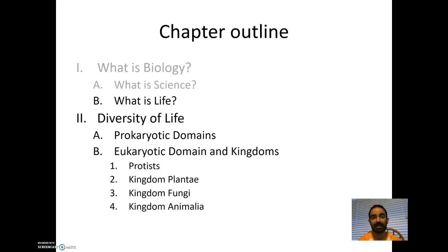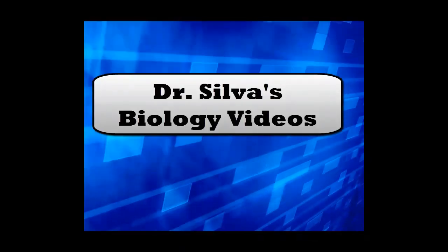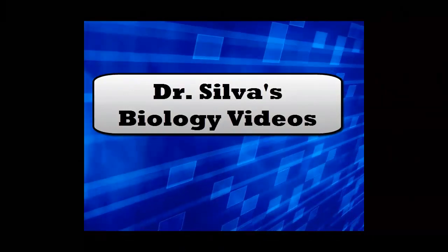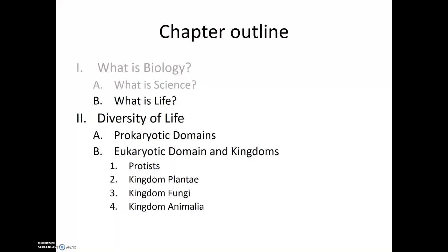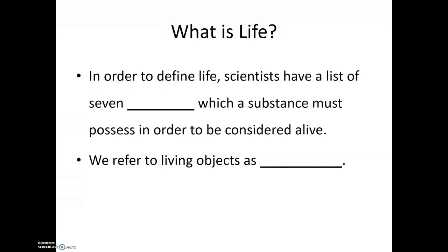Now that we've learned about biology and science, let's find out what it takes for something to be considered alive. Let's talk about the characteristics of life. We've established that science is a way of asking questions, and to complete this definition of biology, we need to know what it means for something to be alive. Scientists have a list of seven criteria which a substance must possess in order to be considered alive.